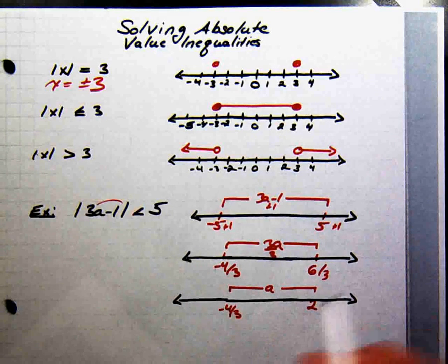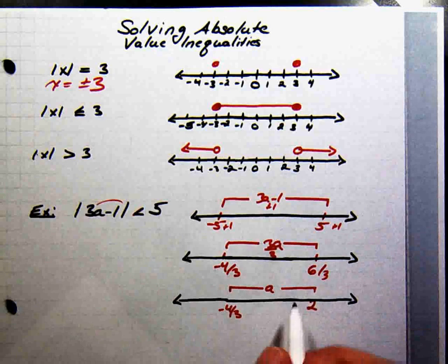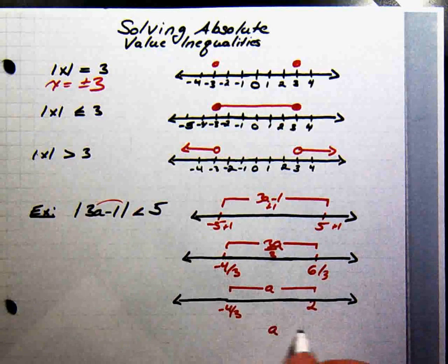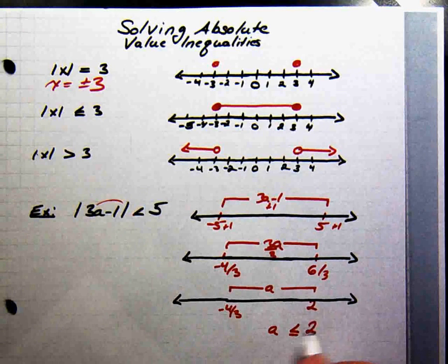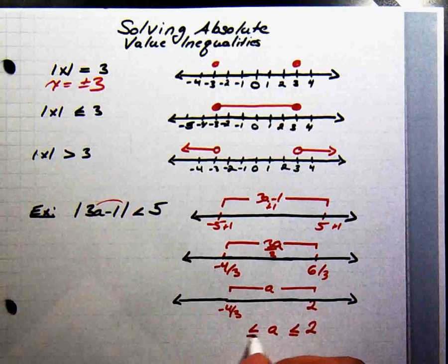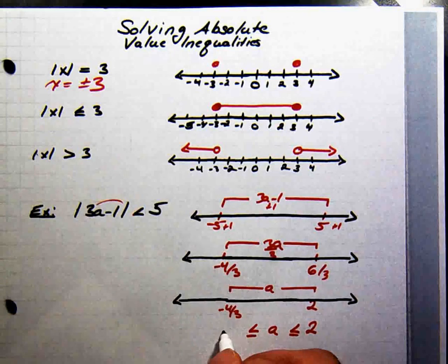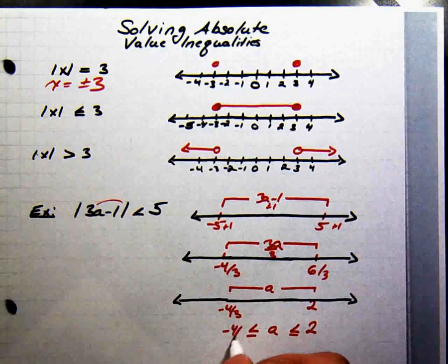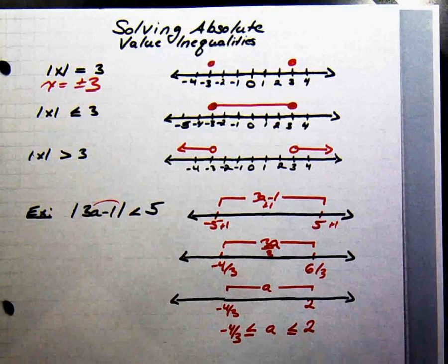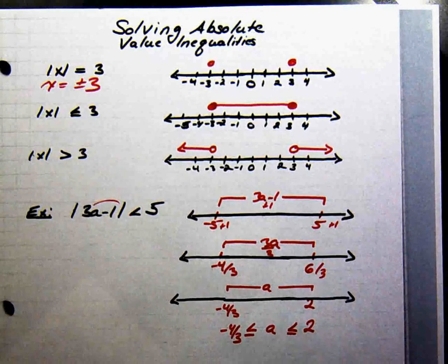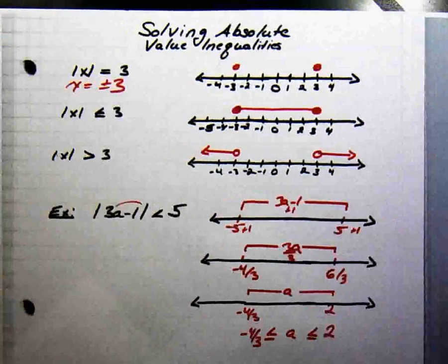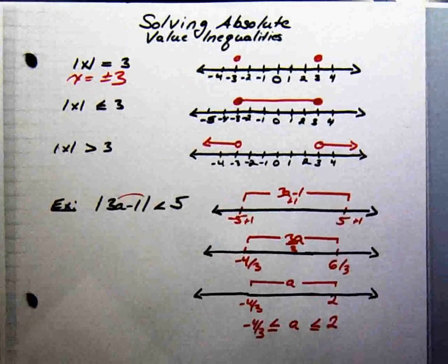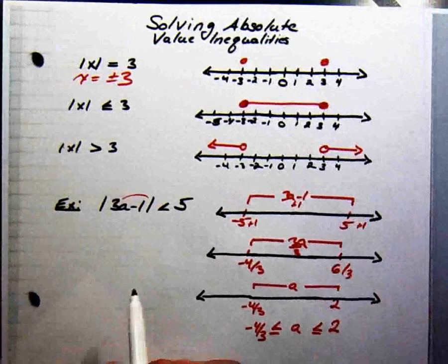Then dividing by 3, a is going to be in between negative 4 thirds and 2. And we can write that as a is less than or equal to 2 and greater than or equal to negative 4 thirds.